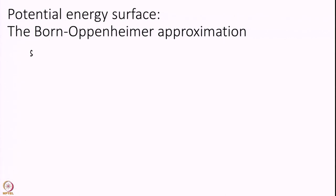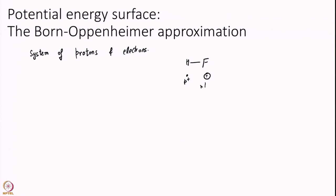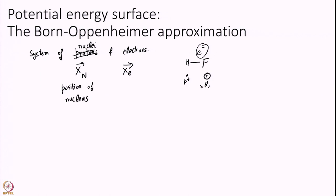Let us say you have a system of protons and electrons — that is what molecules really are. You can think of any molecule: H has one proton, fluorine is a bigger molecule with many protons. You can imagine n number of nuclei and some number of electrons. Let me denote the position of all nuclei as X_n and the position of electrons as X_e.